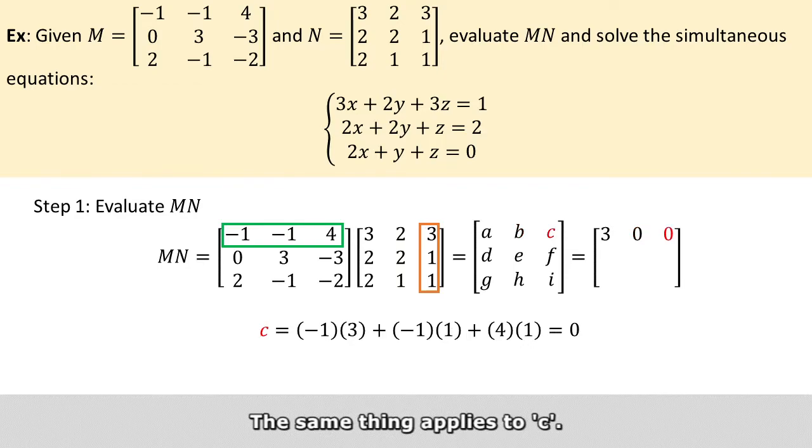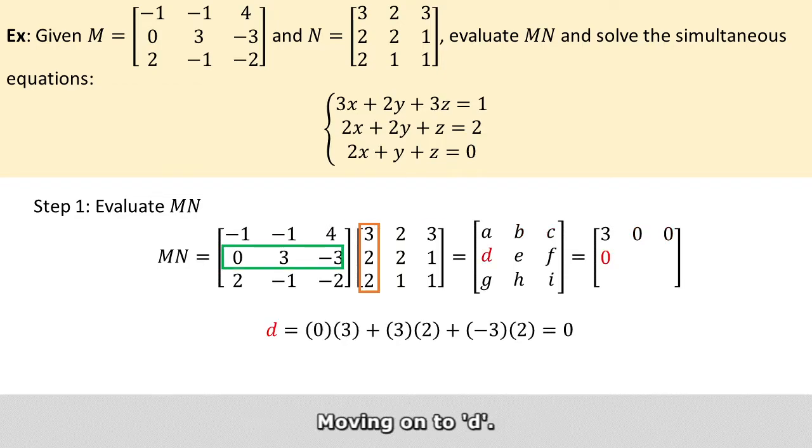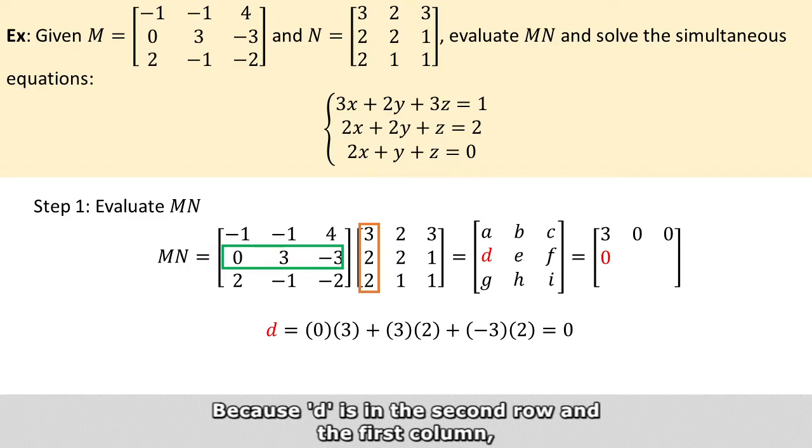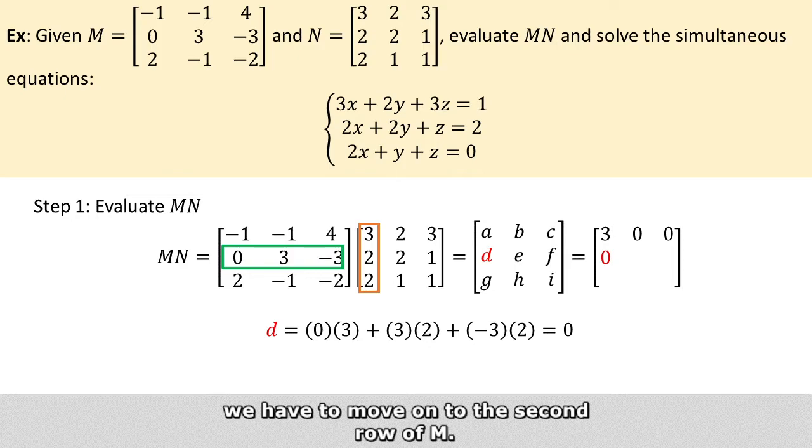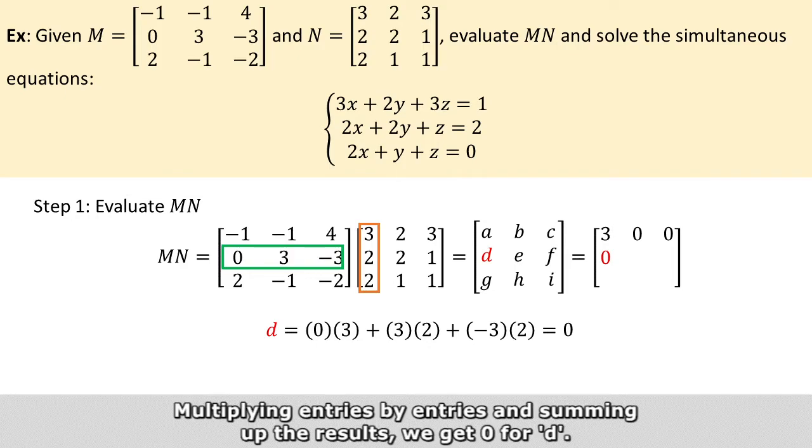Same thing applied to C, and then moving on to D. Because D is in the second row and the first column, we move to the second row of M. Multiplying entries by entries and then summing up the results, we get 0 for D.